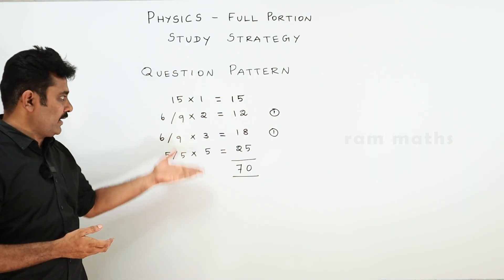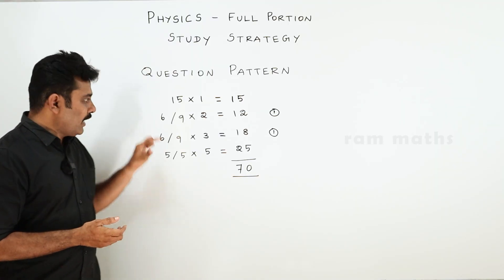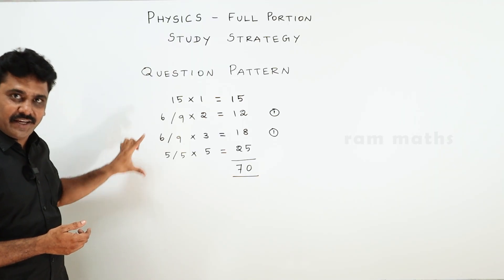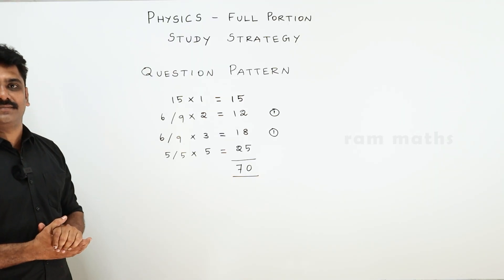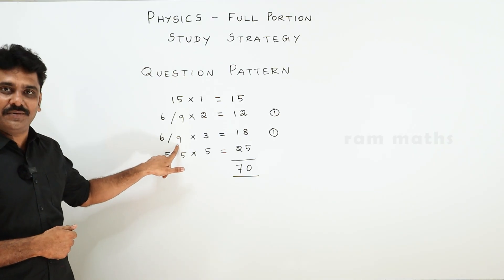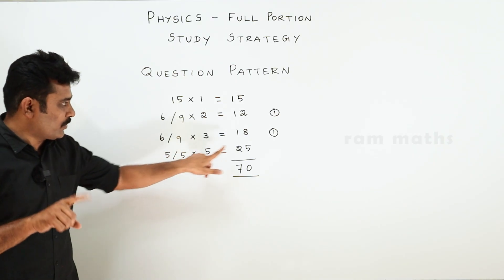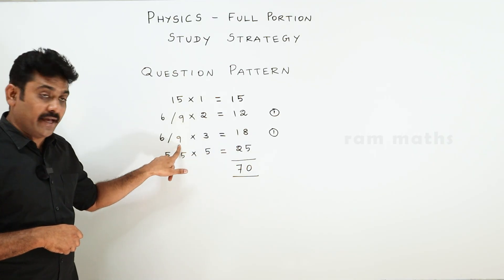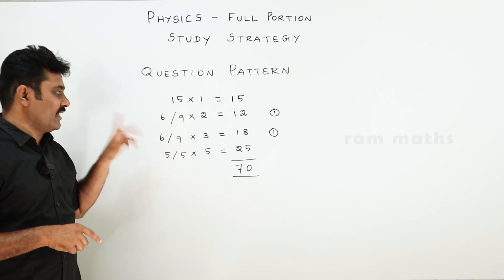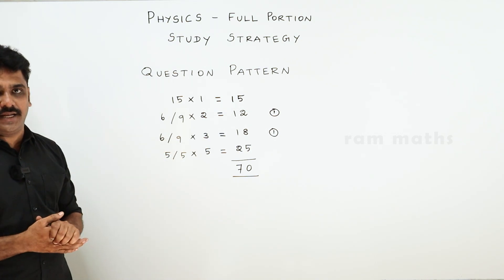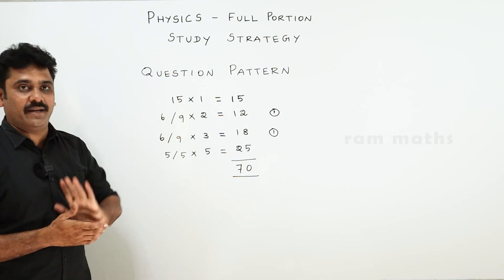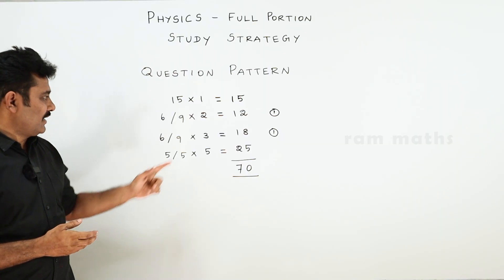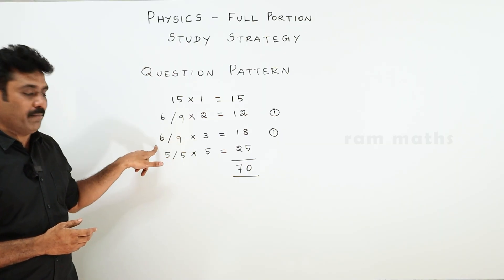We will complete the exam pattern. If you follow any method, that is the same method. You have 9 questions, one compulsory and remaining 8 open-choice, you answer 5 questions. That is Part 3: 6 questions × 3 marks = 18 marks.